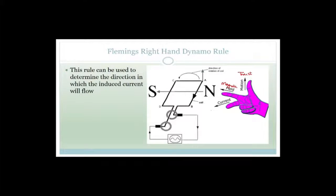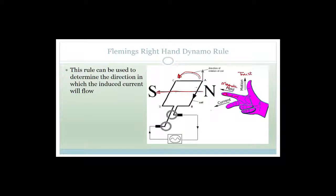Looking at this example: the field is going from north to south. You need to pick one side of the wire — in this case the wire is rotating up. So we have the motion going up, the field going across, and at right angles to both, the current comes out of the page towards us. We can see the current is coming out of the page.